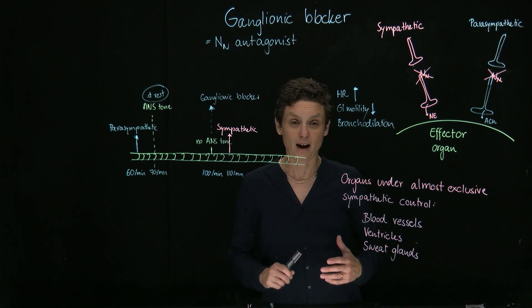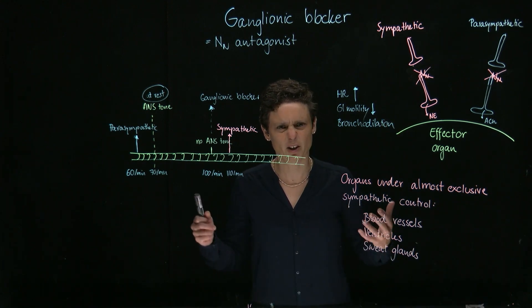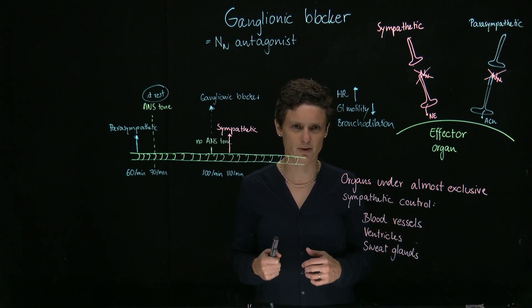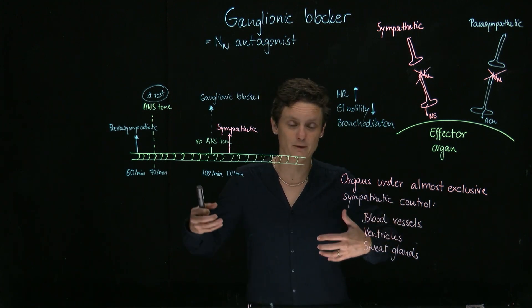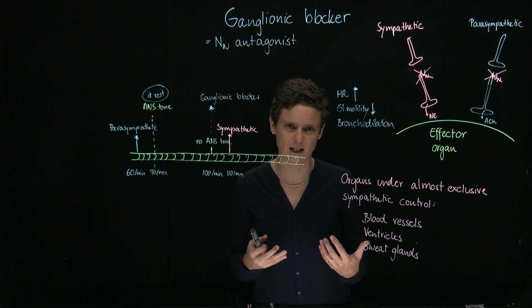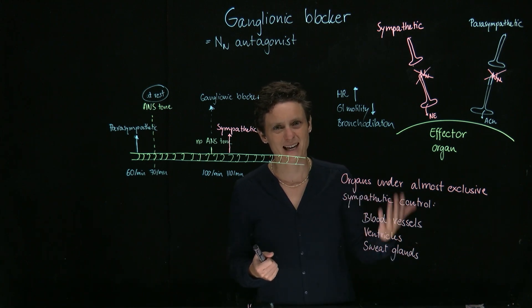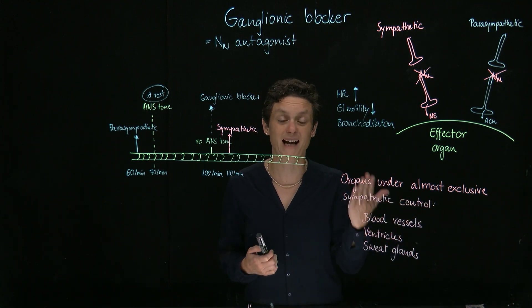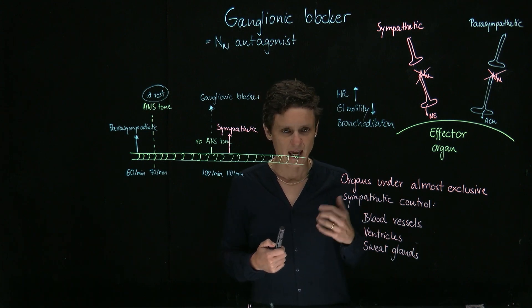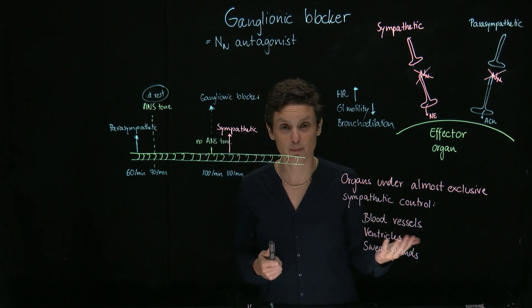There are a couple of examples for organs where there's not this dual control scenario, where there's not this fighting from the sympathetic and parasympathetic. We have a couple of organ systems that are almost exclusively under sympathetic control. Here are a couple of very important examples.